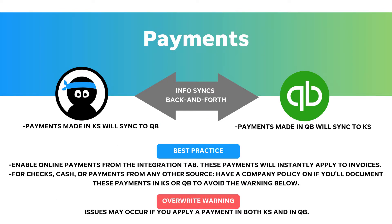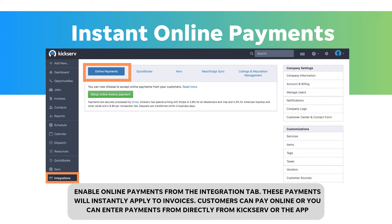You can document payments inside KickServe or inside QuickBooks. Have a company policy on whether you'll document payments in KickServe or in QuickBooks to avoid errors such as dual entry of a payment. KickServe allows you to document payments from any source, but the best way to secure payment is by setting up online payments within KickServe. Online payments will automatically apply to the invoice. Customers will be able to pay online and your team can accept payments from the office or in the field from the mobile app. From the integrations tab, select online payments and follow the instructions to set up your Stripe account. It's free and it only takes about 10 minutes. This is the best way to automate payment collection.